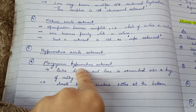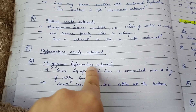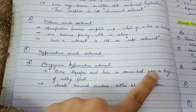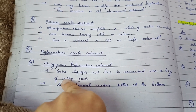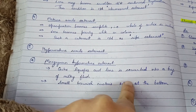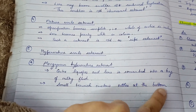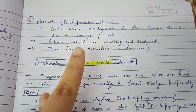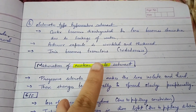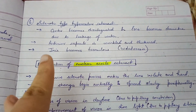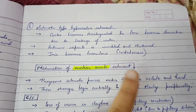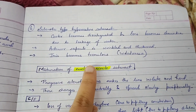In morgagnian hypermature cataract, the cortex liquefies and the lens is converted into a bag of milky fluid. A small brownish nucleus settles at the bottom. In sclerotic type hypermature cataract, the cortex becomes disintegrated and the lens becomes shrunken due to leakage of water. The anterior capsule is wrinkled and thickened, the iris becomes tremulous, and this condition is known as iridodonesis.